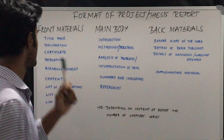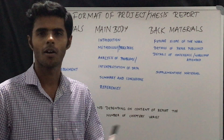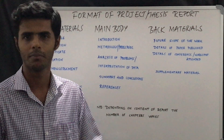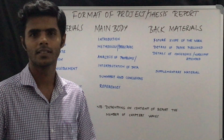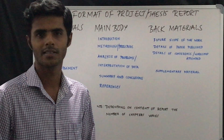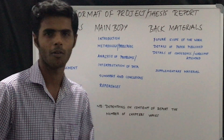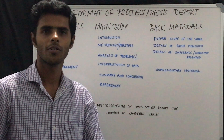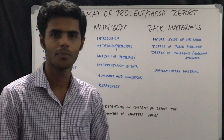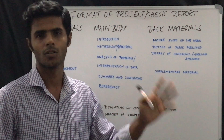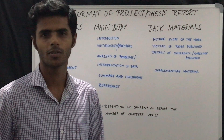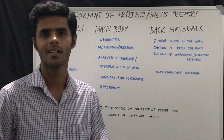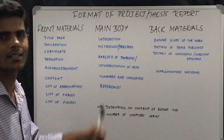The fourth one is dedication, which is an optional page. If you are interested, you can dedicate your dissertation to your family members, teachers, or friends — it is left to you. The fifth one is acknowledgement, where you are going to mention all the names of people who have helped you throughout the project or research work, including your guide's name and your friends.